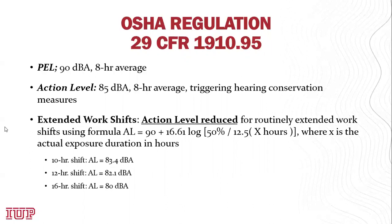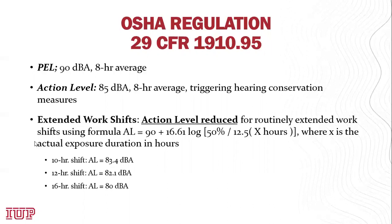For extended work shifts beyond eight hours, the action level is reduced using a formula. Examples show a 10-hour, 12-hour, and 16-hour shift, and the action level reduces with each additional hour beyond a normal eight-hour shift. For any shift duration — nine-hour, 14-hour, and so on — you can use the formula to calculate the appropriate action level, or refer to tables available from multiple sources rather than performing the calculation manually.